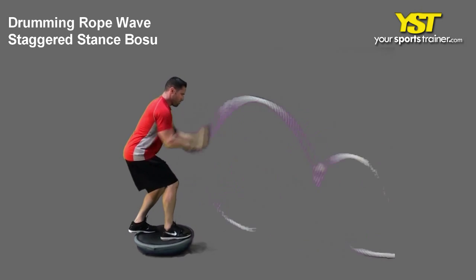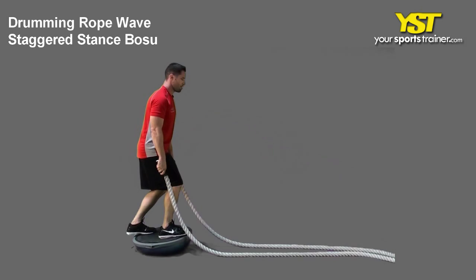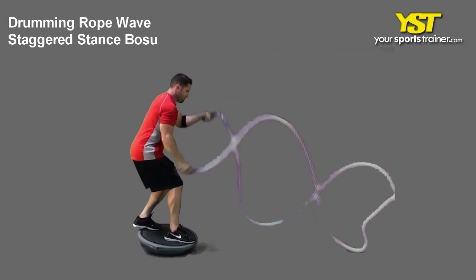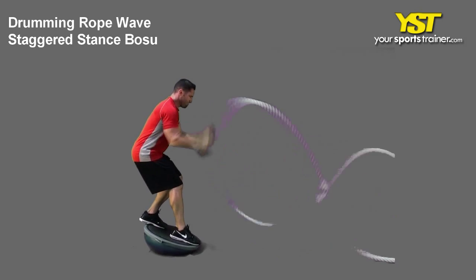Lay a Bosu ball on the floor with the platform side facing up. Lay two heavy ropes parallel out in front of you. Stand between the two ropes at one end. Grab the end of each rope and hold them at your side.